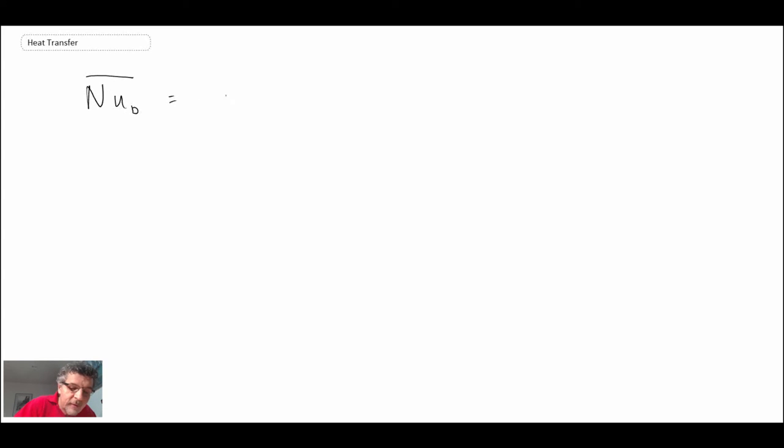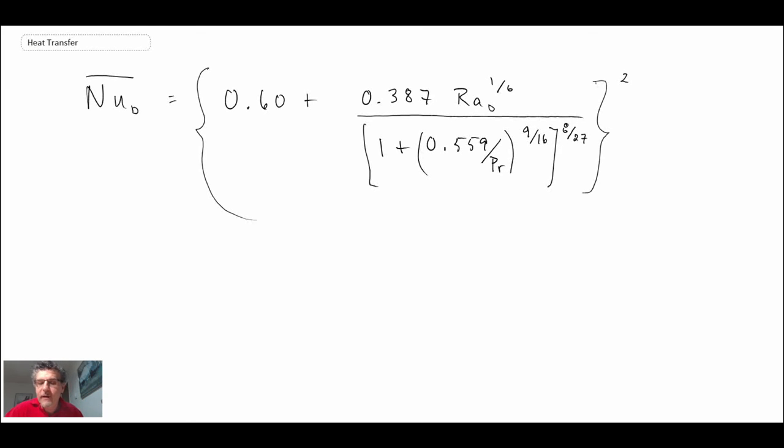and so let me give that correlation. And this one applies over a wide range of Rayleigh numbers. And looking at this form, it is very similar to what we saw for the vertical isothermal plate, where we had either the laminar or the turbulent correlation.